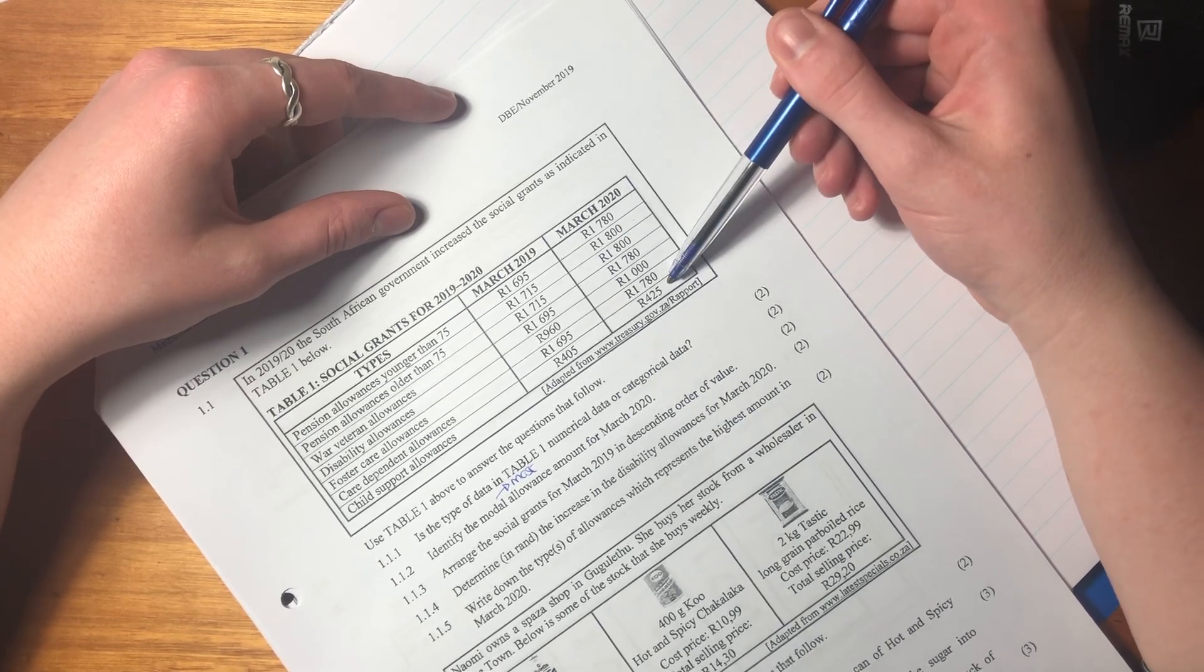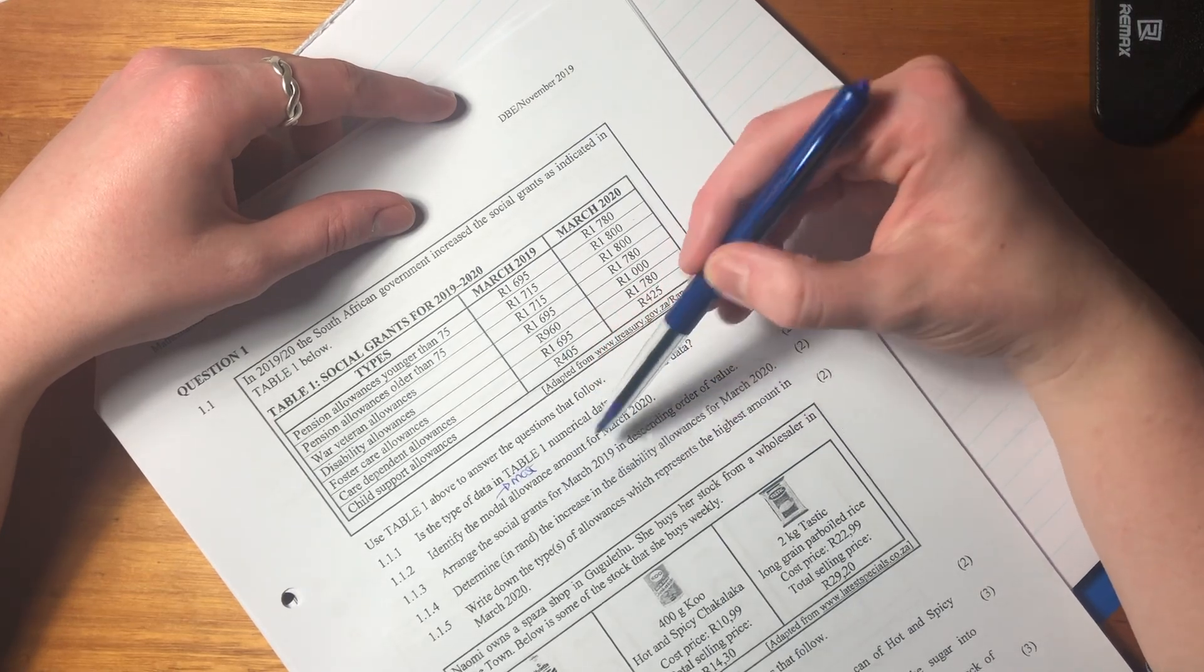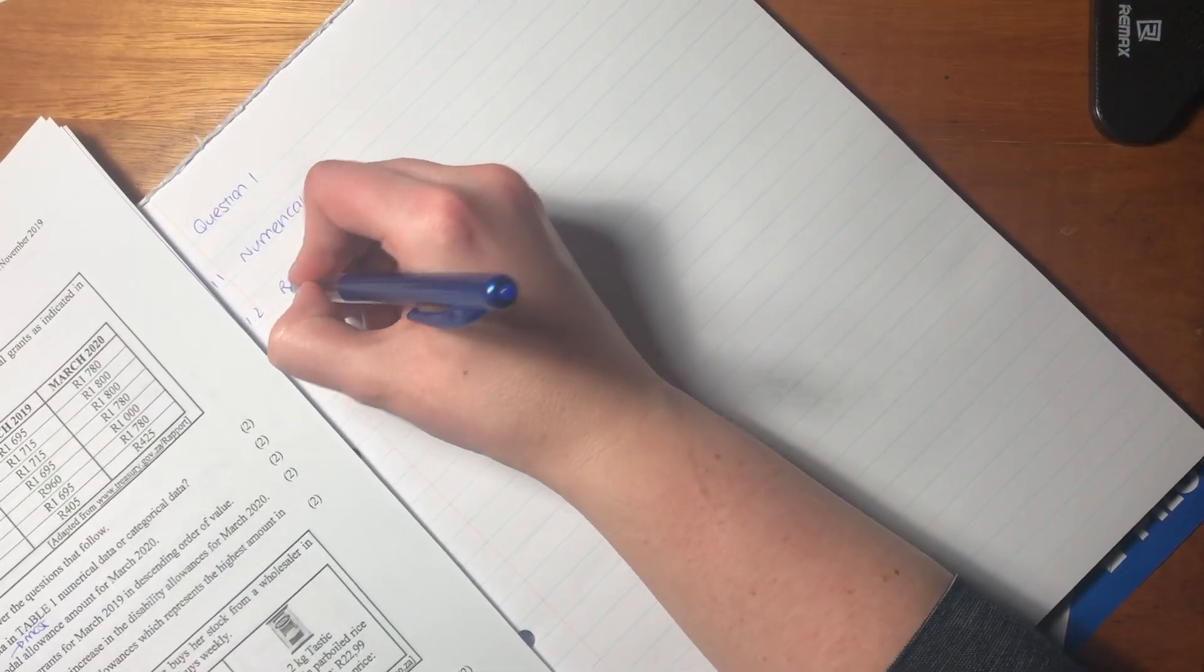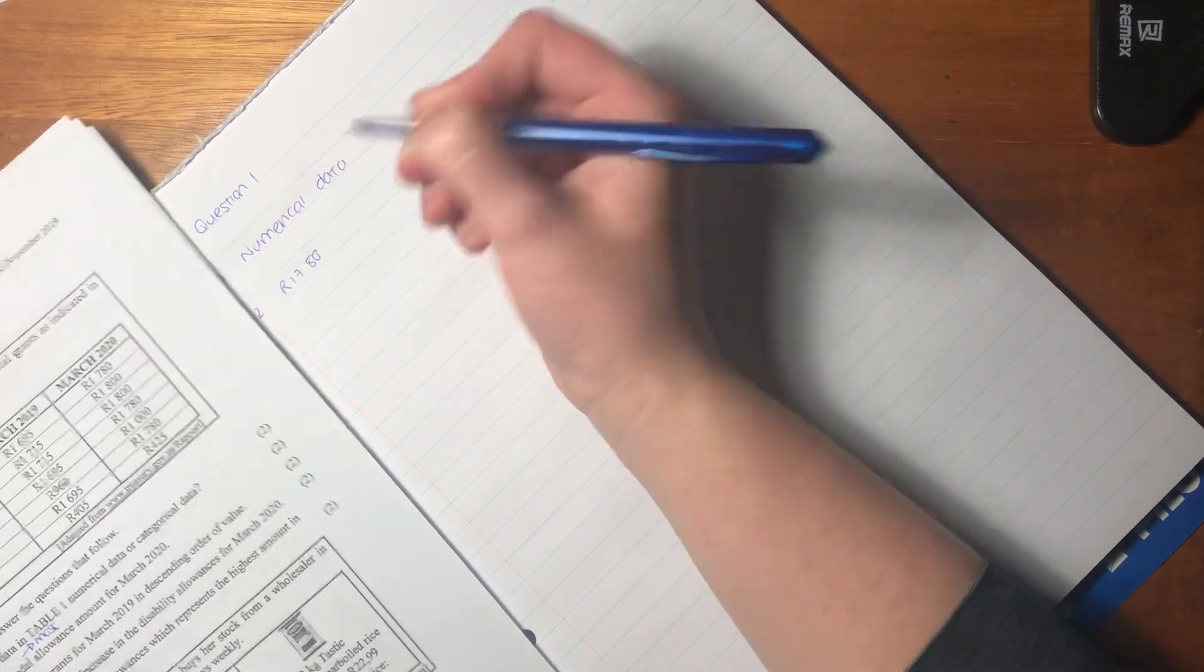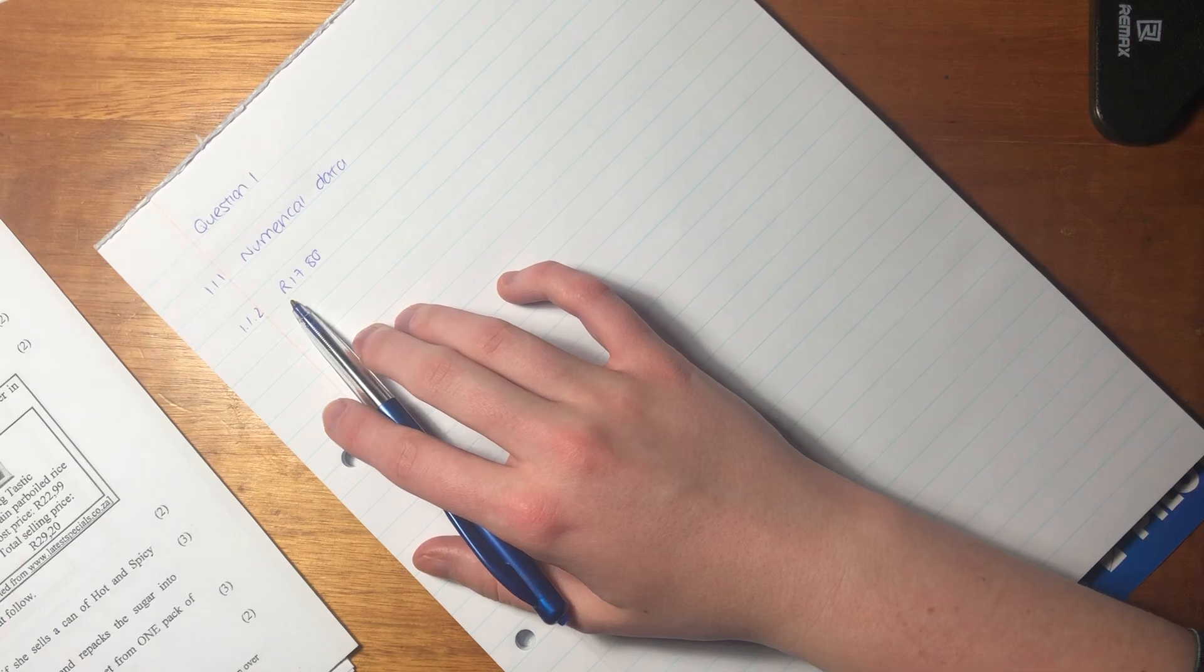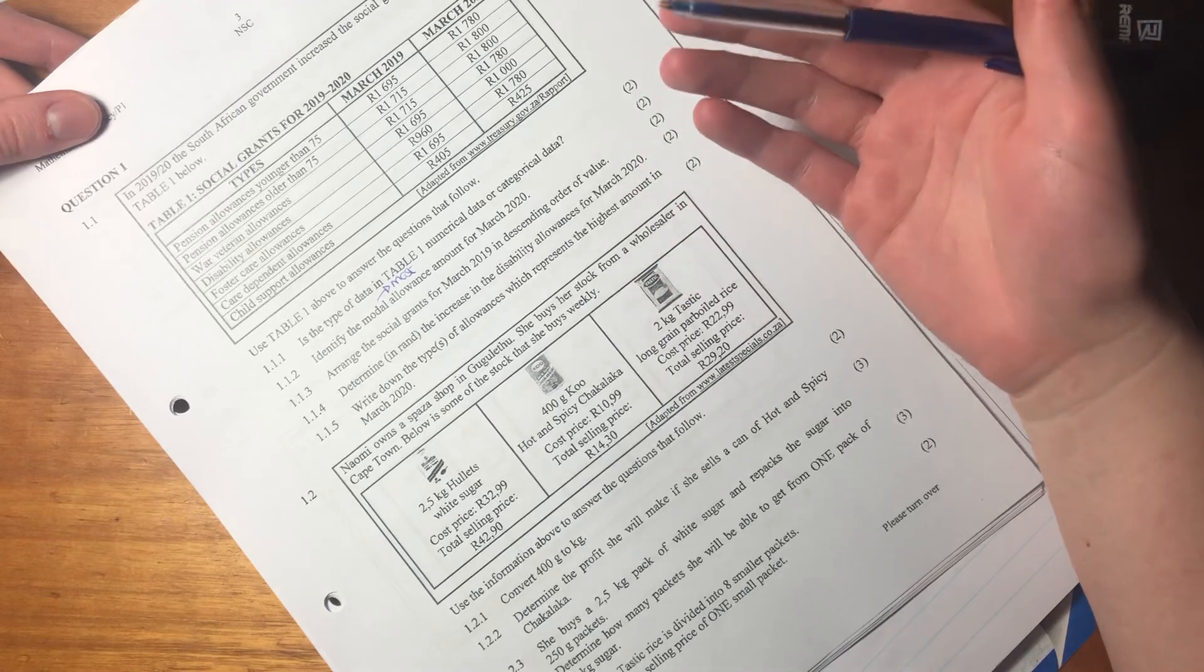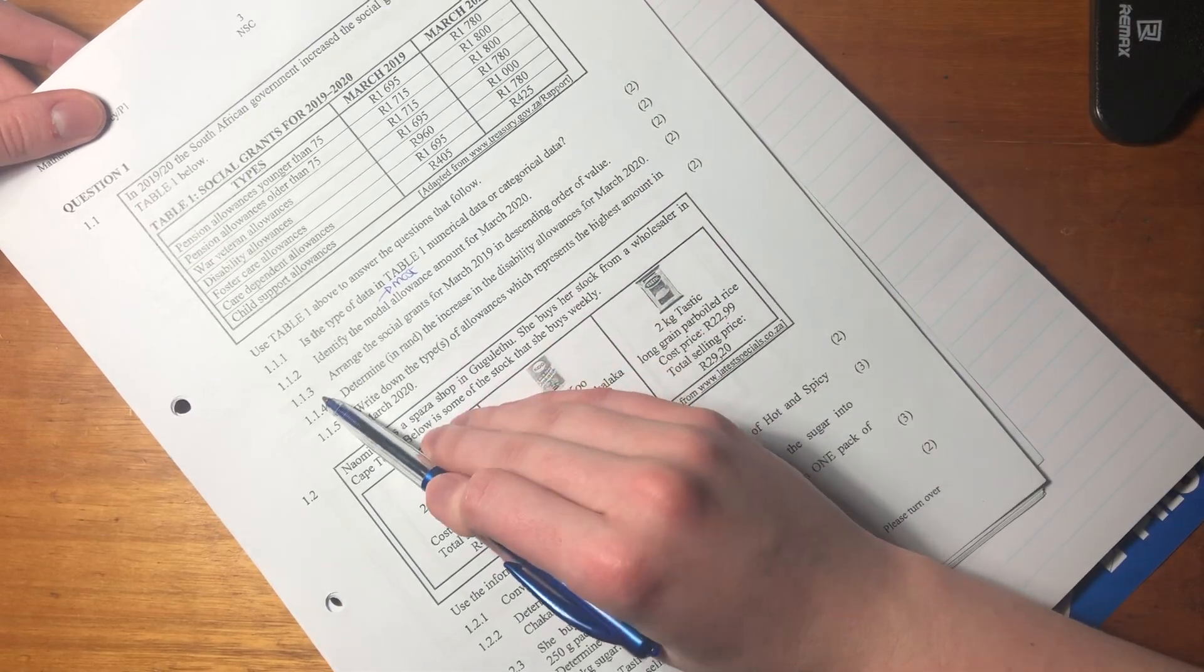If we run our eyes down this column, 1780 appears three times, 1800 appears twice, 1000 appears once, and 425 appears once. Therefore the modal allowance amount for March 2020 is 1780 rand. It's important to put your rand value in because it indicates that it's a currency, it means something outside of just being a number.